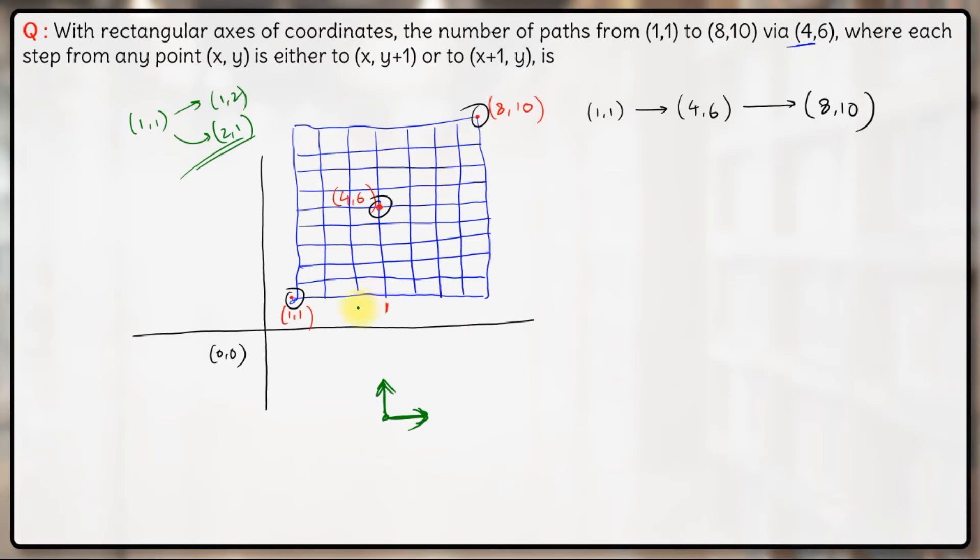So this is the kind of question that we have done in permutation and combination. This is more of a PNC question than coordinate geometry question. So to go from (1,1) to (4,6), what you need to do is you need to take 3 steps right and 5 steps upwards.